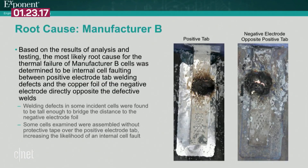Exponent's findings related to the thermal failures of cells from manufacturer B showed that manufacturing defects on the welds of the positive tab were able to bridge the space between the positive tab and the neighboring negative electrode, resulting in cell faulting and, in some instances, thermal runaway.